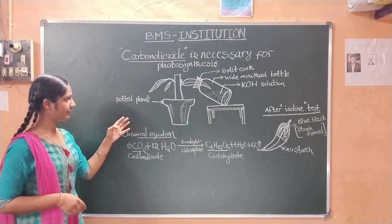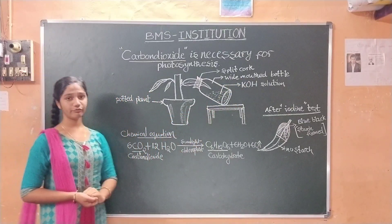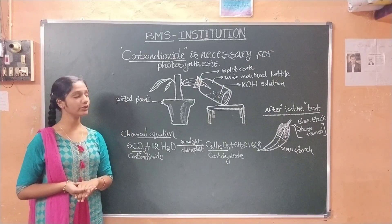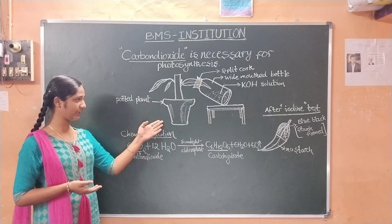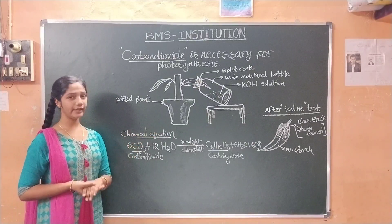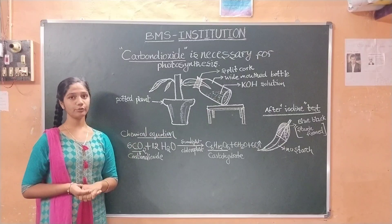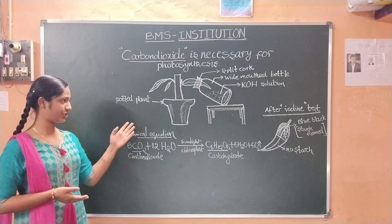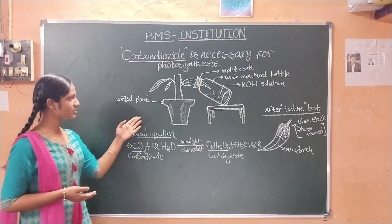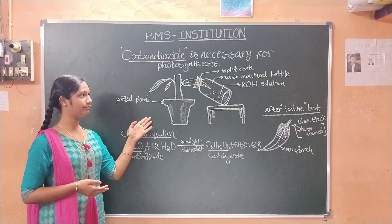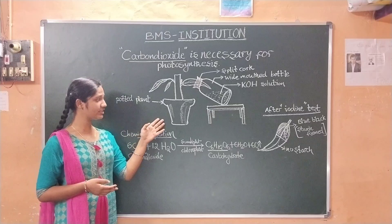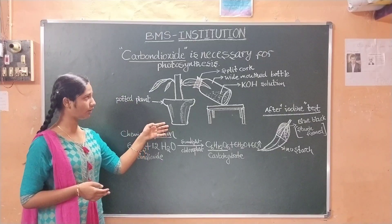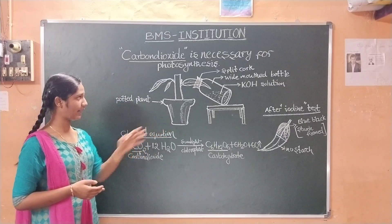Before starting this experiment, we have to keep the potted plant in a dark room for one week to destarch it. Destarch means the pot which has no starch — this is called a destarch plant.